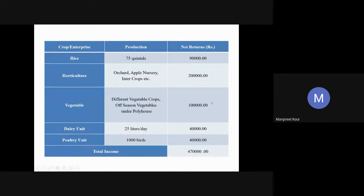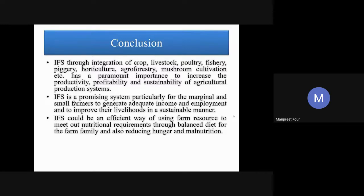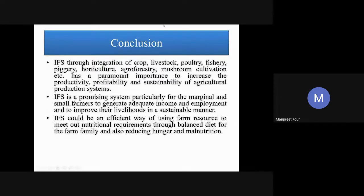In conclusion, whatever the agro-climatic zone — irrigated, rain-fed, subtropical, intermediate, or high hills — IFS is a sustainable alternate land use system. There is no doubt that farmers are doubling their income when switching to this type of integrated farming. Thank you very much. If there are any questions, please unmute and ask.